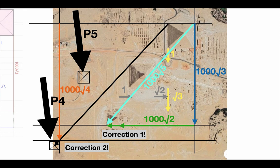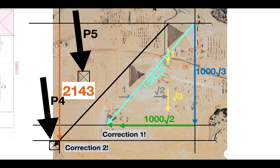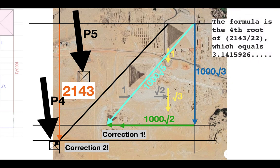Now we move to another confirmation for P4. That orange line is not a thousand root four — that was the second mistake. It's actually 2143 royal cubits. That's the second correction. If you take 2143 divided by 22, the fourth root of that equals pi. An Indian mathematician found that formula, so 2143 is related to the number pi.